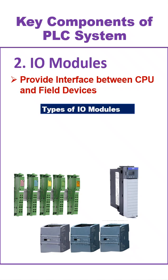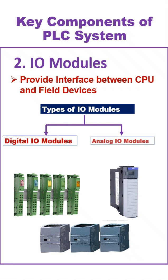There are two types of I/O modules: Digital I/O Module and Analog I/O Module. Digital I/O sends or receives on/off or true/false signals, such as a switch being open or closed. Analog I/O sends or receives continuous signals that vary within a range, such as temperature or pressure readings.